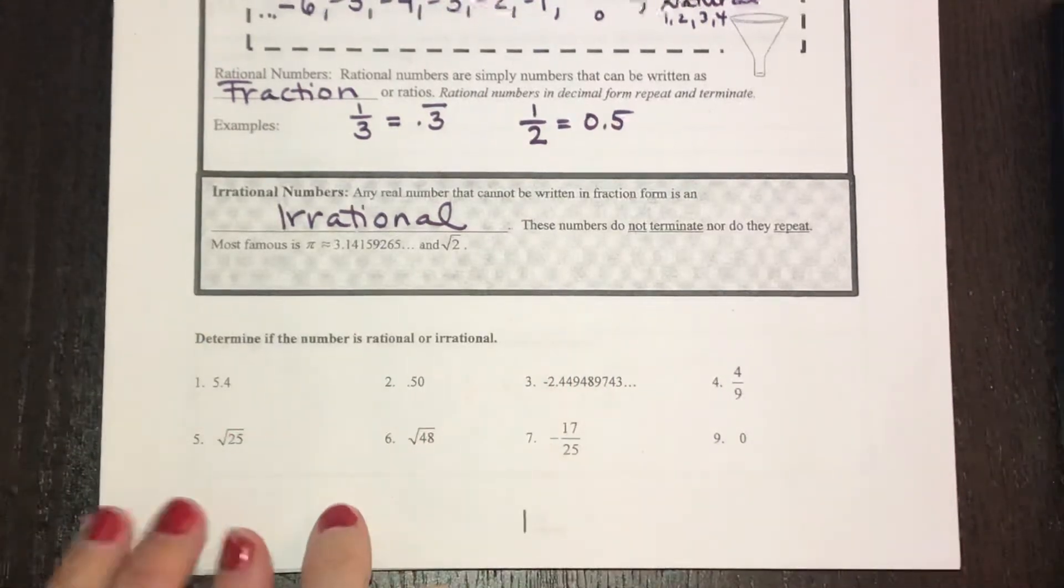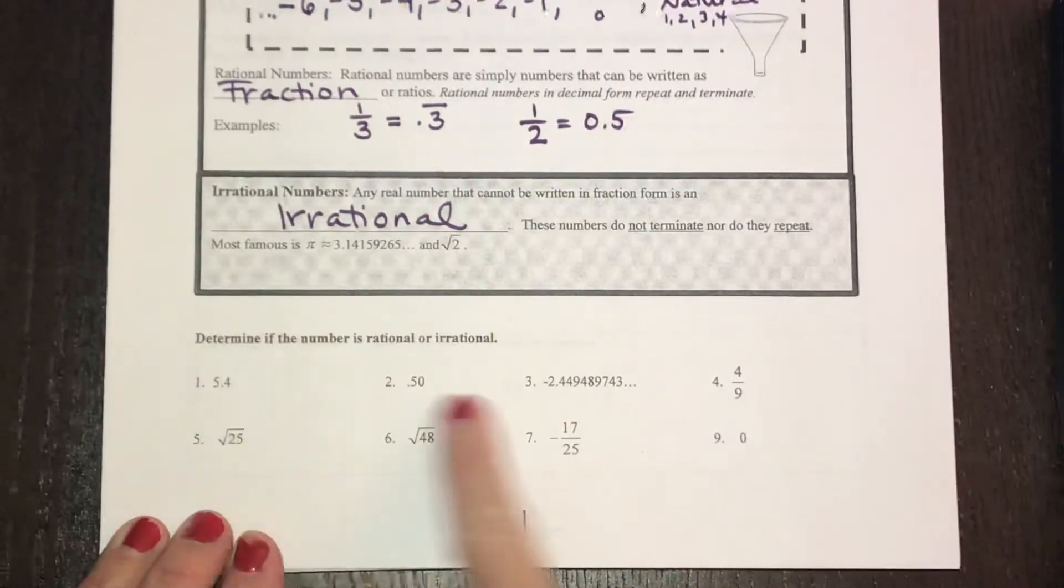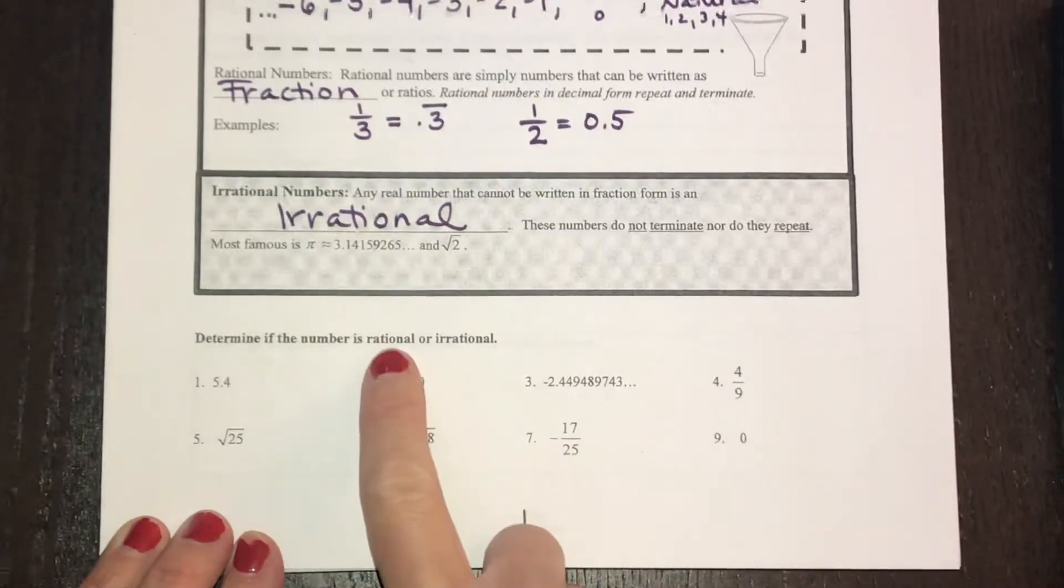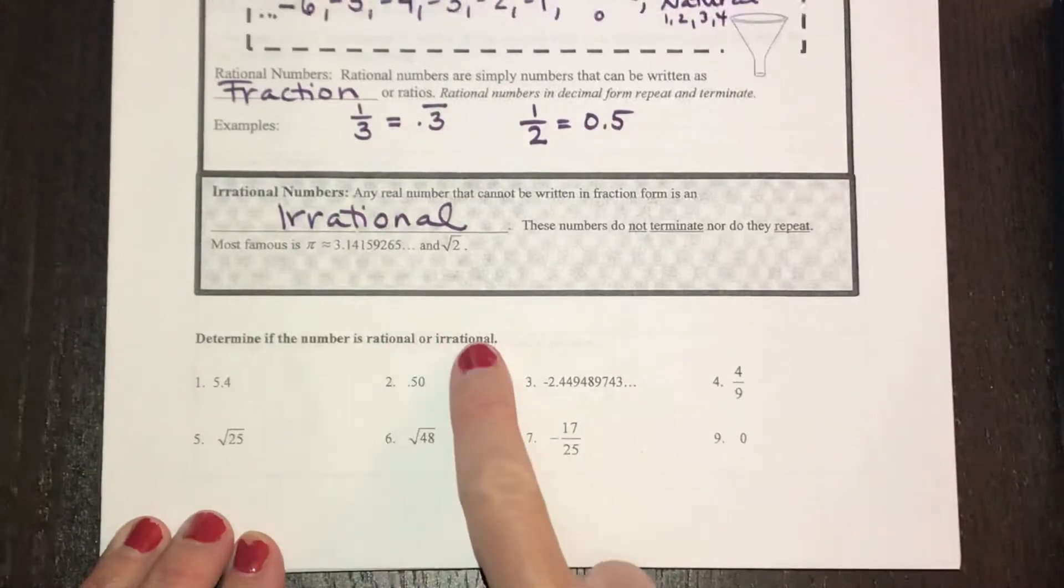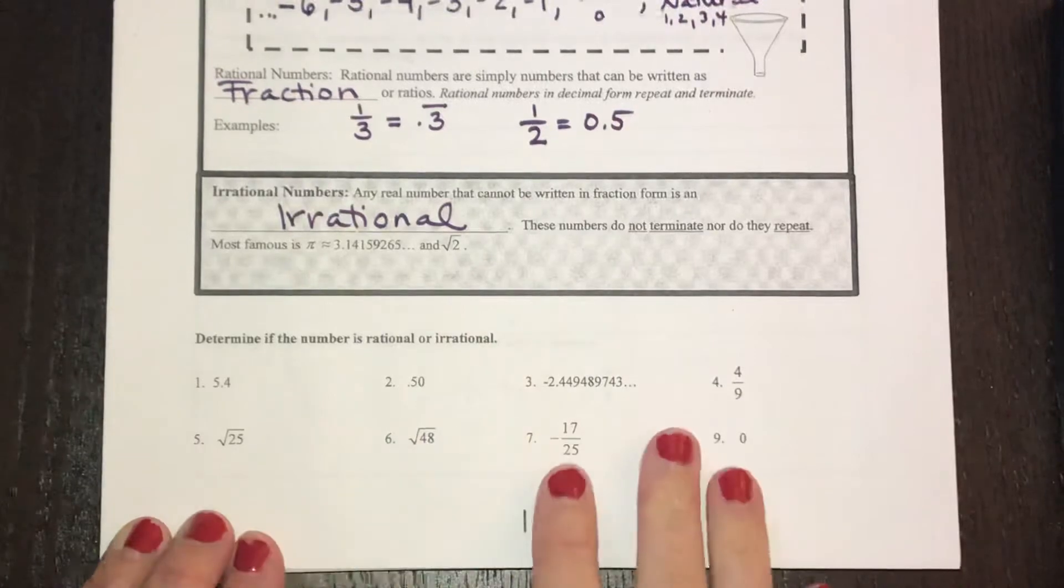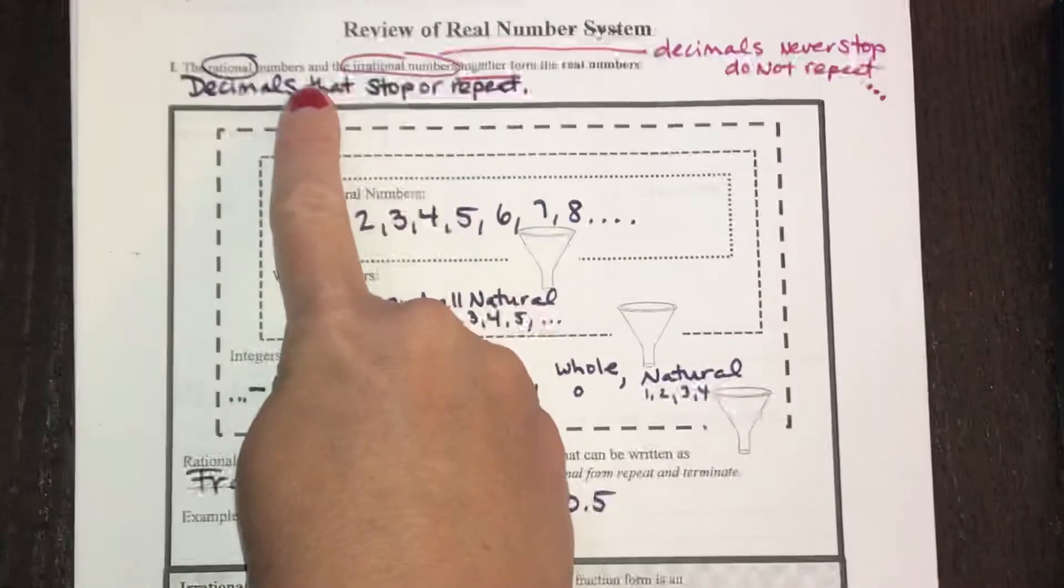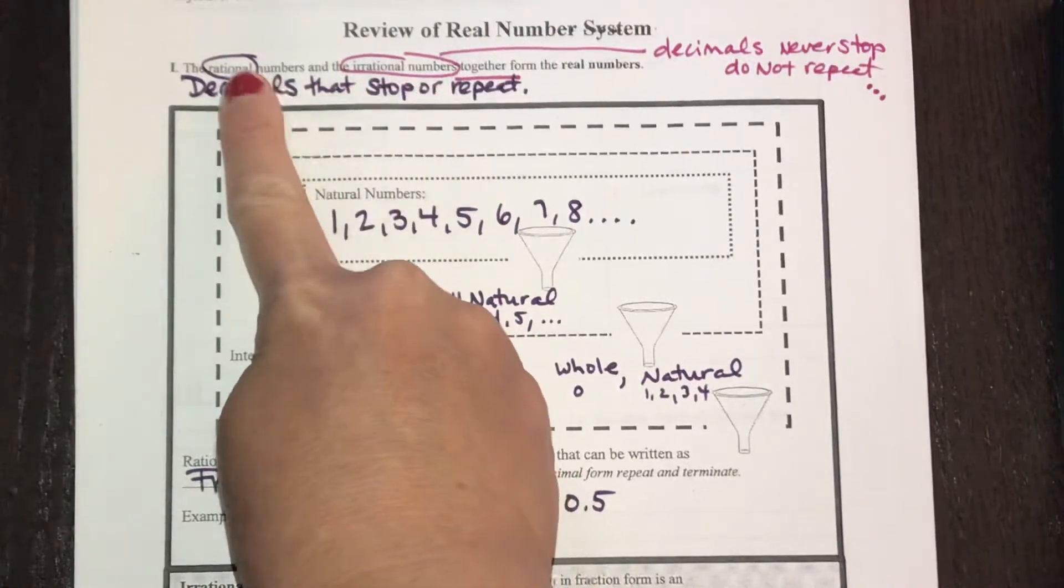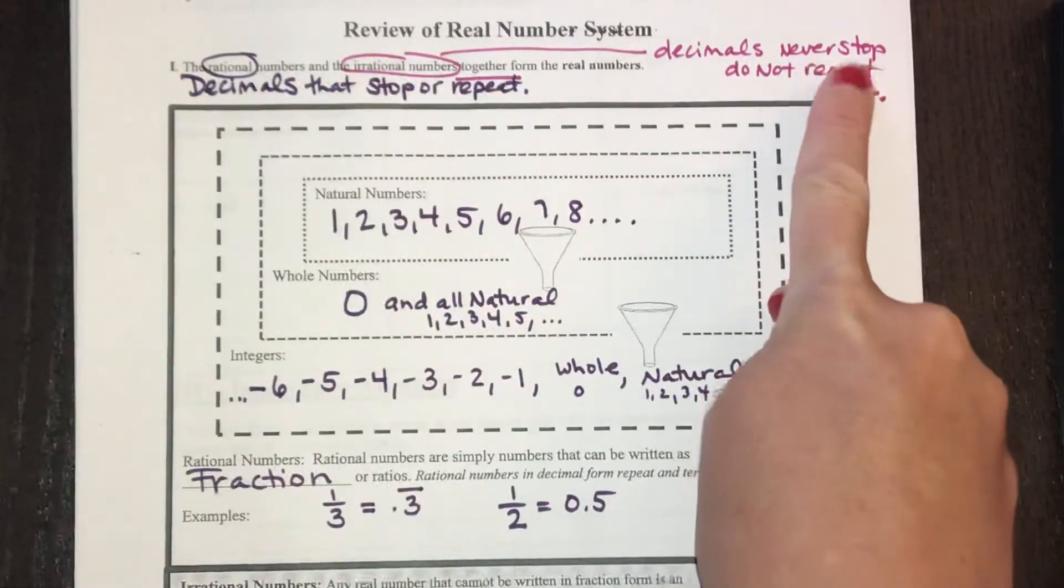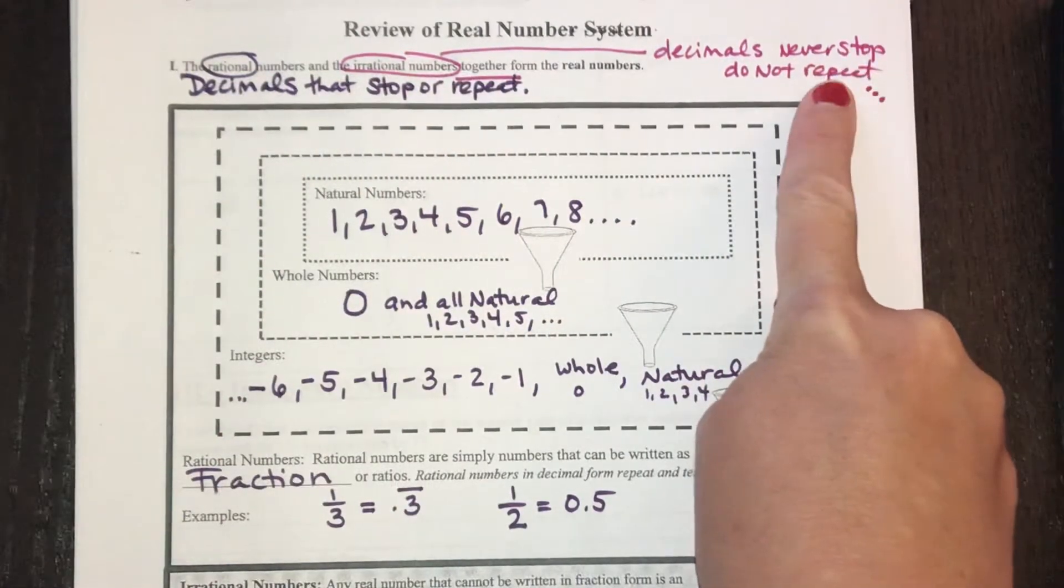In this video I am going to help you determine if these sets of examples are numbers that are rational or irrational. All you need to do is look at the decimal and see if the decimal stops or repeats, that would be rational. If the decimal never stops and never repeats, it would be irrational.